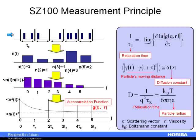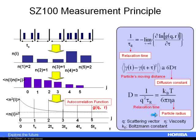For particle size, we essentially count photons with the detector. By looking at this change in photon count rate, we fill up a function called an autocorrelation function. From this autocorrelation function, we extract D — not diameter in this case, but the translational diffusion coefficient. Once we have the diffusion coefficient, we use the Stokes-Einstein equation to calculate either particle radius or particle diameter.